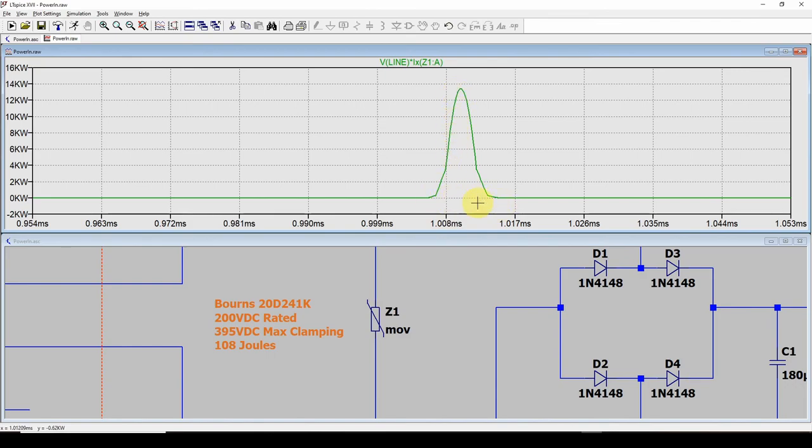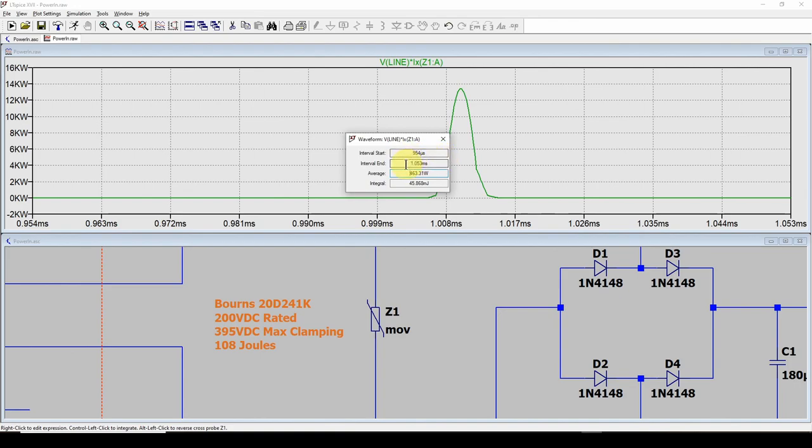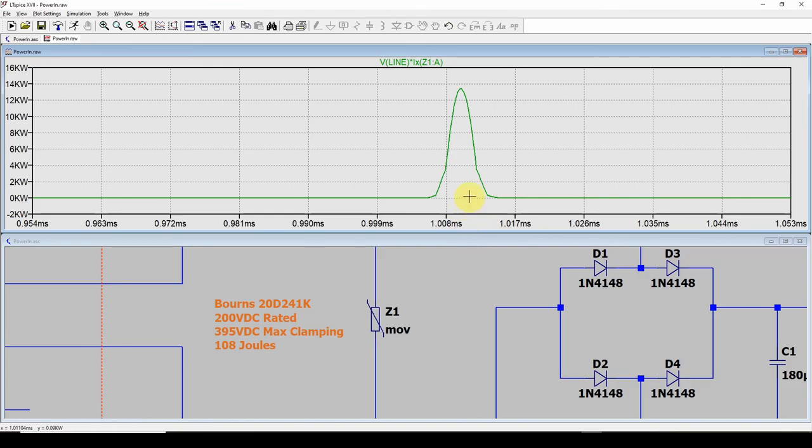So what I can do is I can figure out how many joules or watt seconds were dissipated in this. And to do that, I go control left click, and you can see that LTSpice gives us the average is 463 watts, which doesn't help us. But it takes an integral and tells you how many joules are represented by this amount of energy, and it's 45 millijoules. So no problem whatsoever. It's good for 108 joules, but it only expanded 145 millijoules.